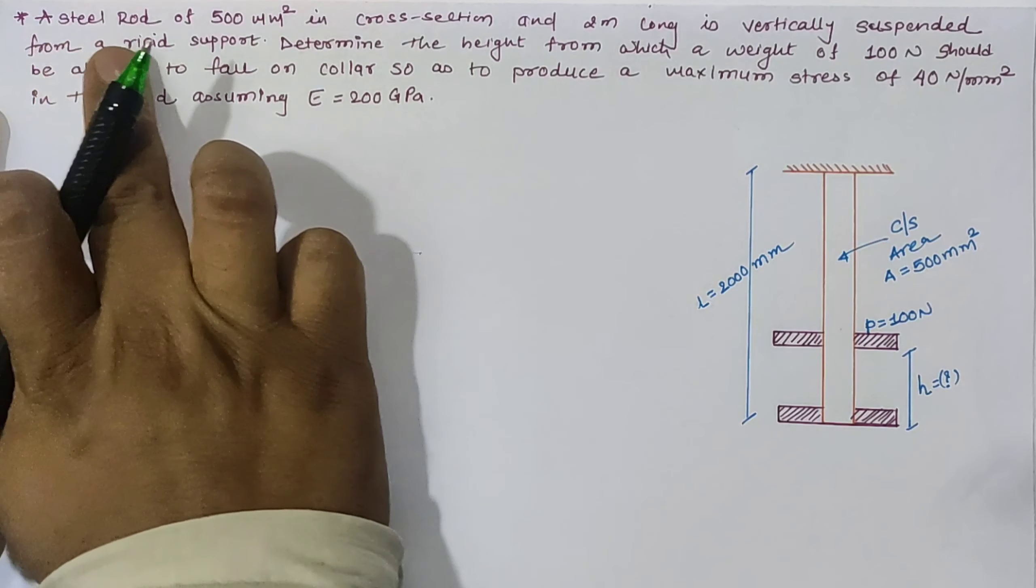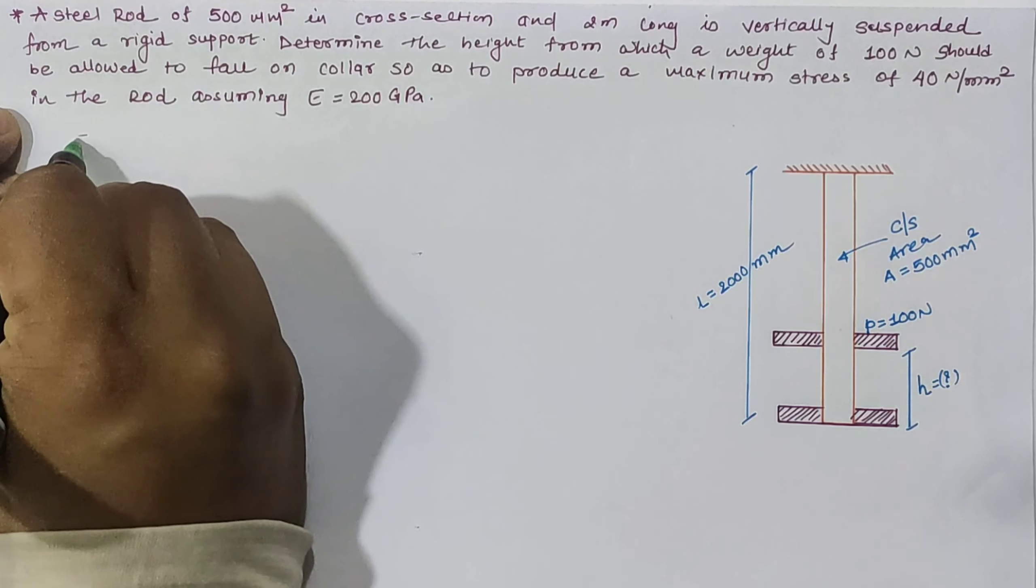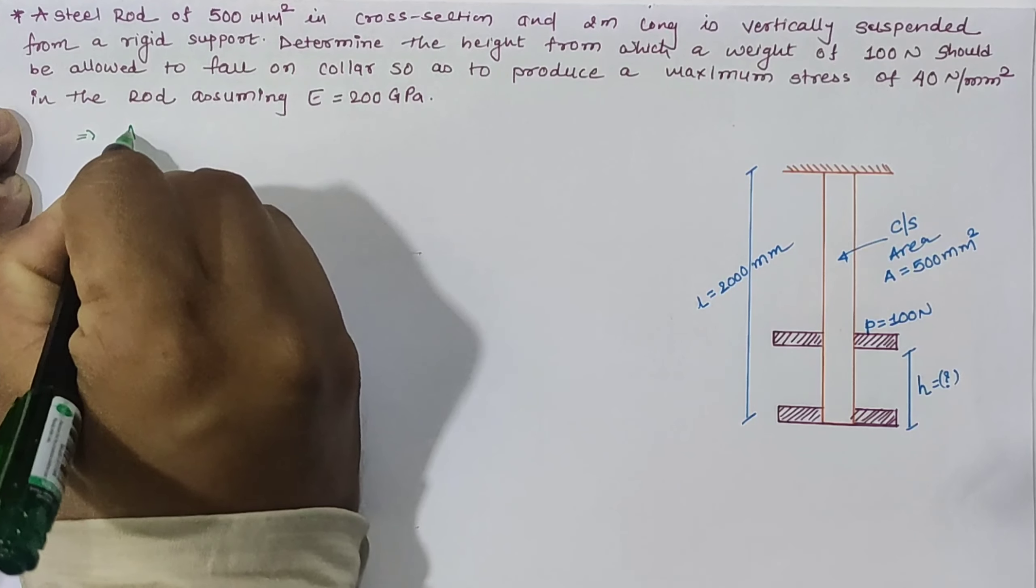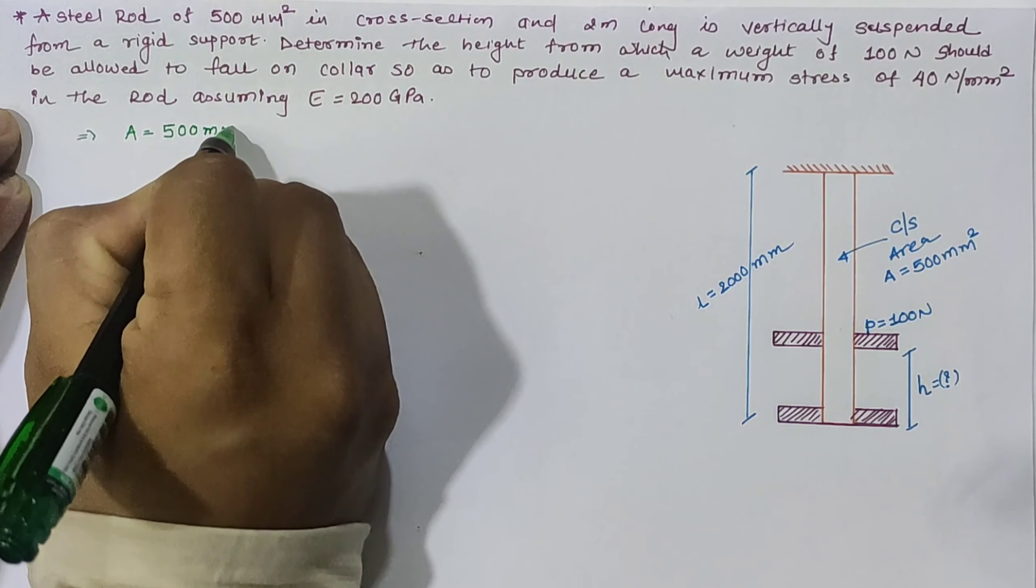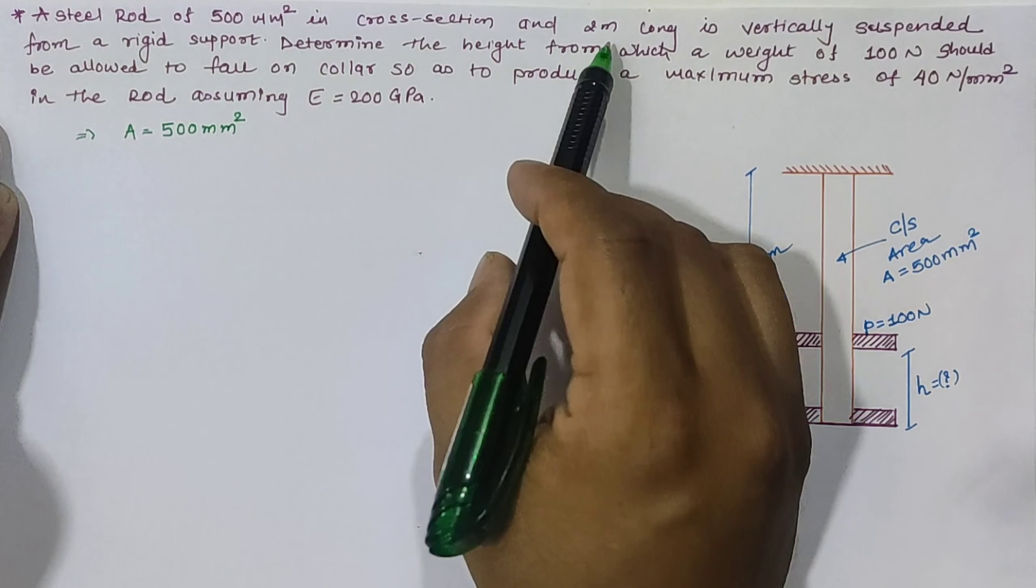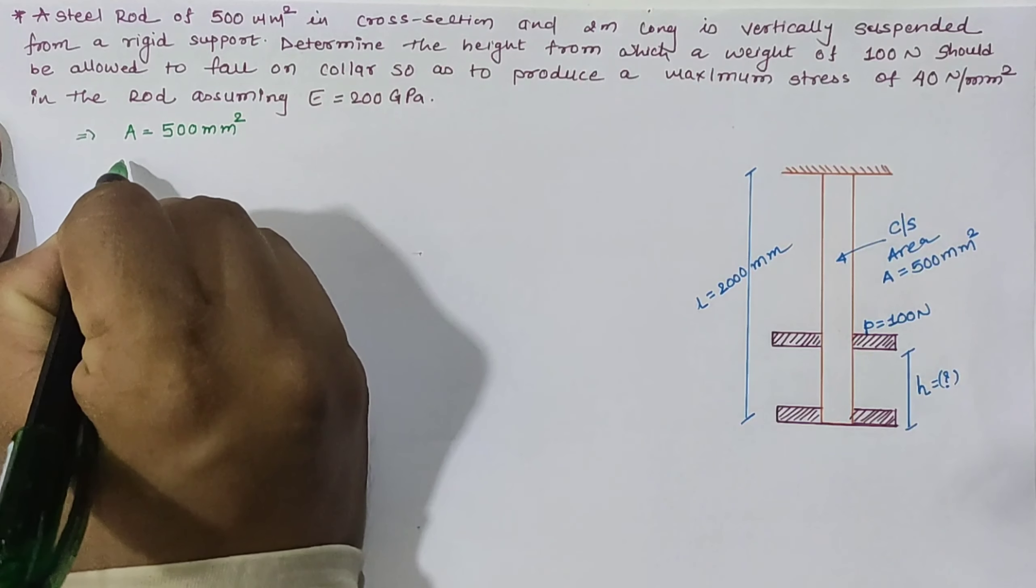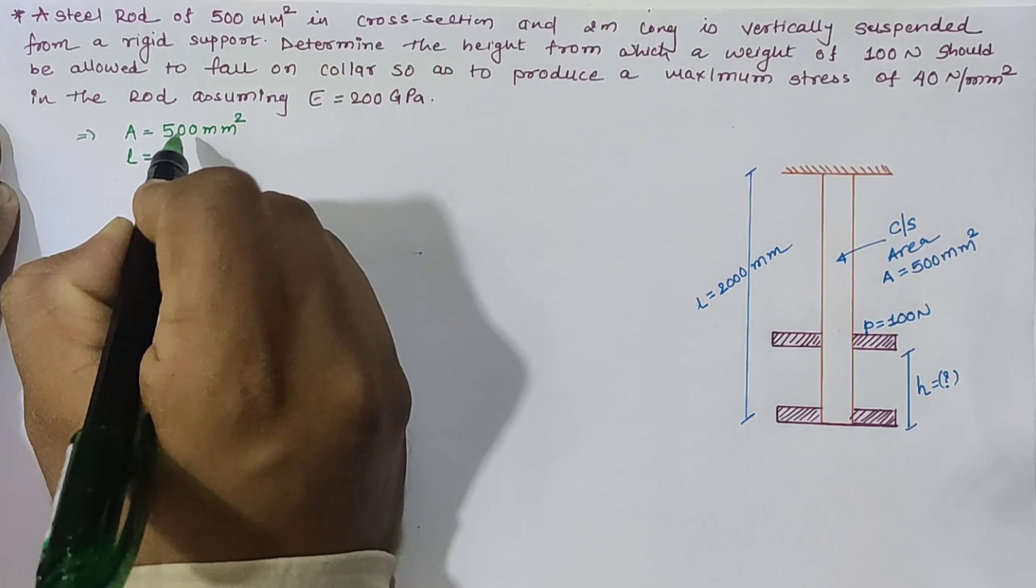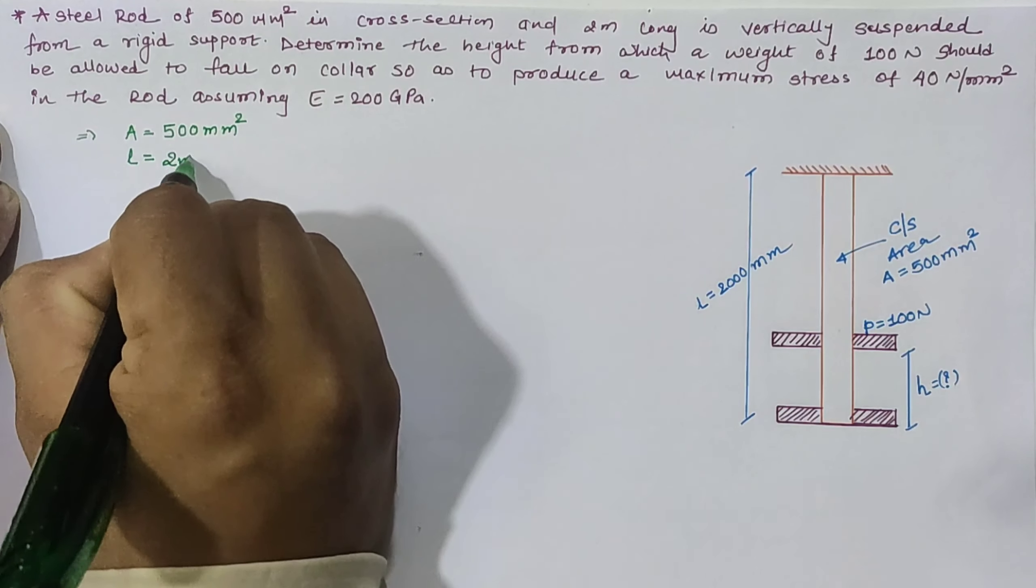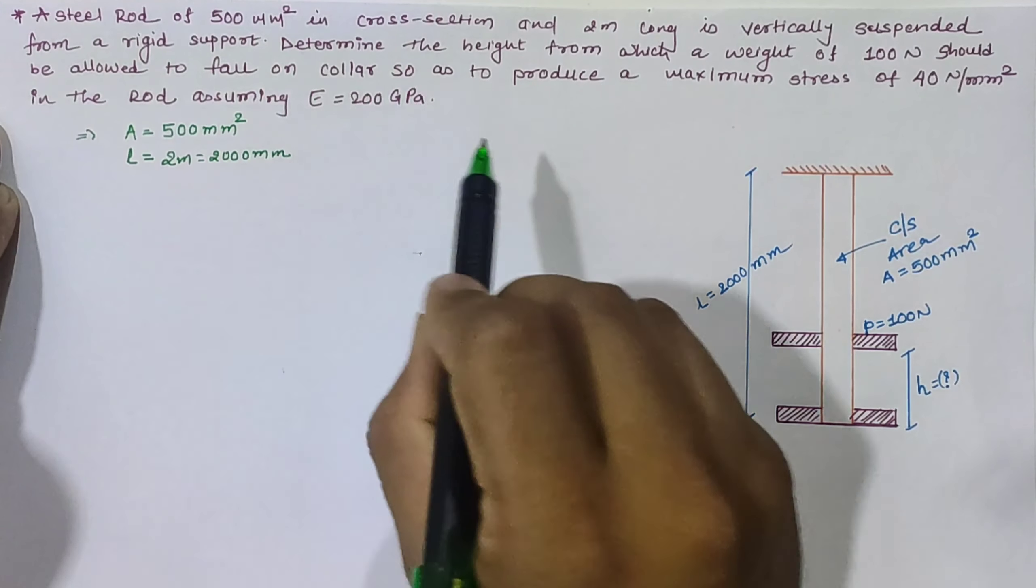So first of all, we have given a steel rod of 500 mm square in cross section, meaning we have a cross-sectional area of 500 mm². The rod is 2 meters long, vertically suspended from a rigid support, which means the length is 2000 mm.